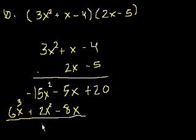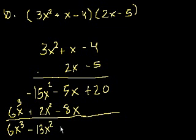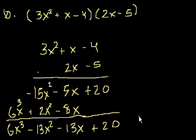Now we just add up everything. So we get 6x to the third minus 15 plus 2 minus 13x squared minus 13x plus 20. So 6x to the third minus 13x squared. I'm just checking all the choices. Minus 13x plus 20. That's choice B.